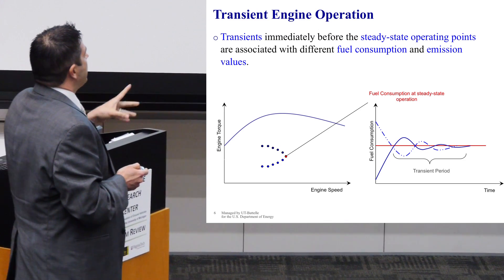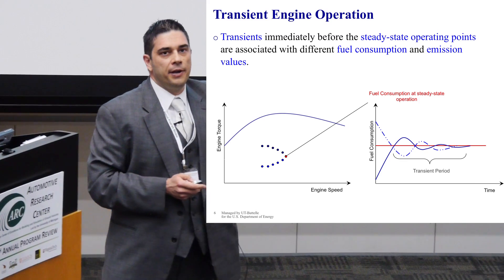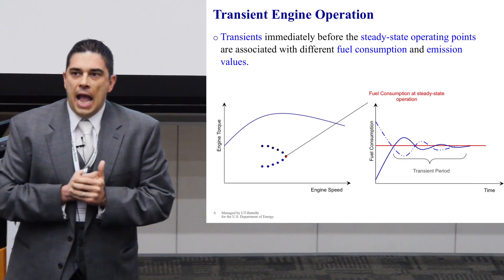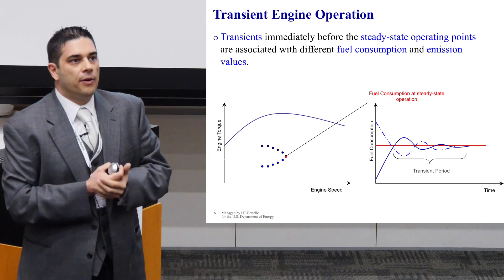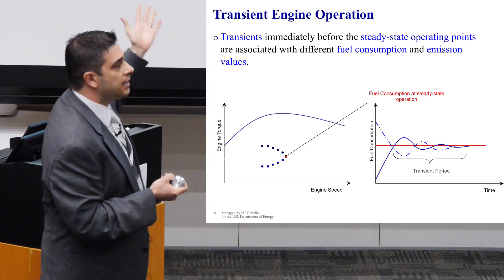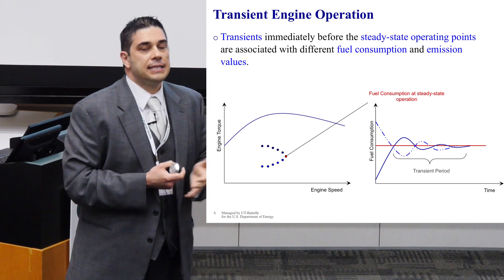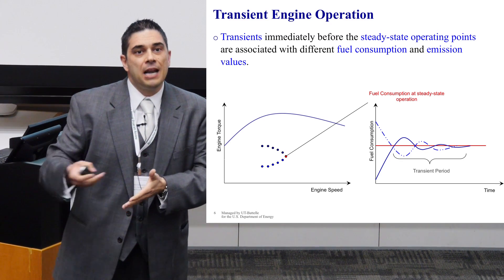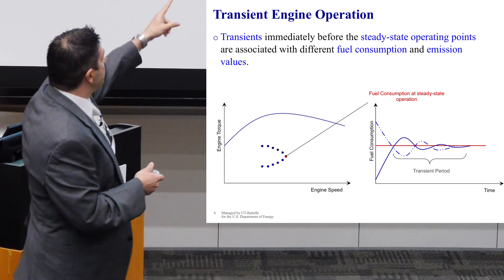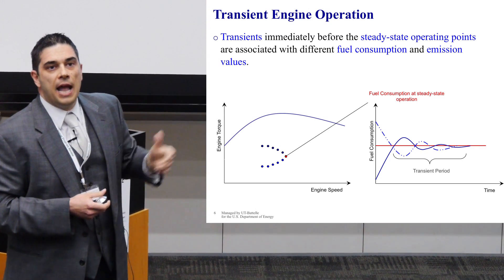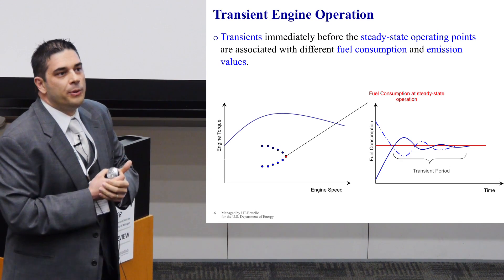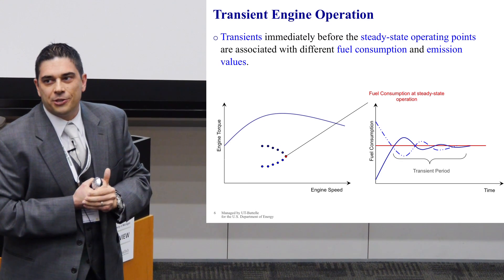There is a small transient period which is path-dependent. This is why when we drive on a highway, we get true fuel economy, because we operate the engine at steady-state operation, which has been calibrated for. Although when we drive in a city, we operate the engine during this transient period, and we interpolate values of steady-state operating points, and we cannot really capture transient operation.